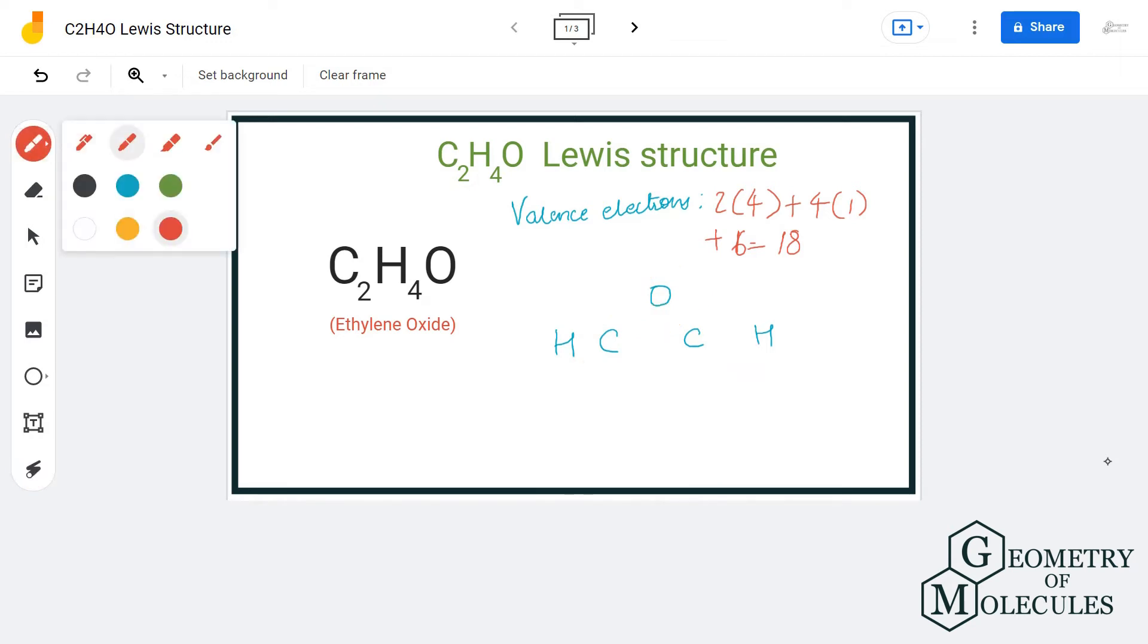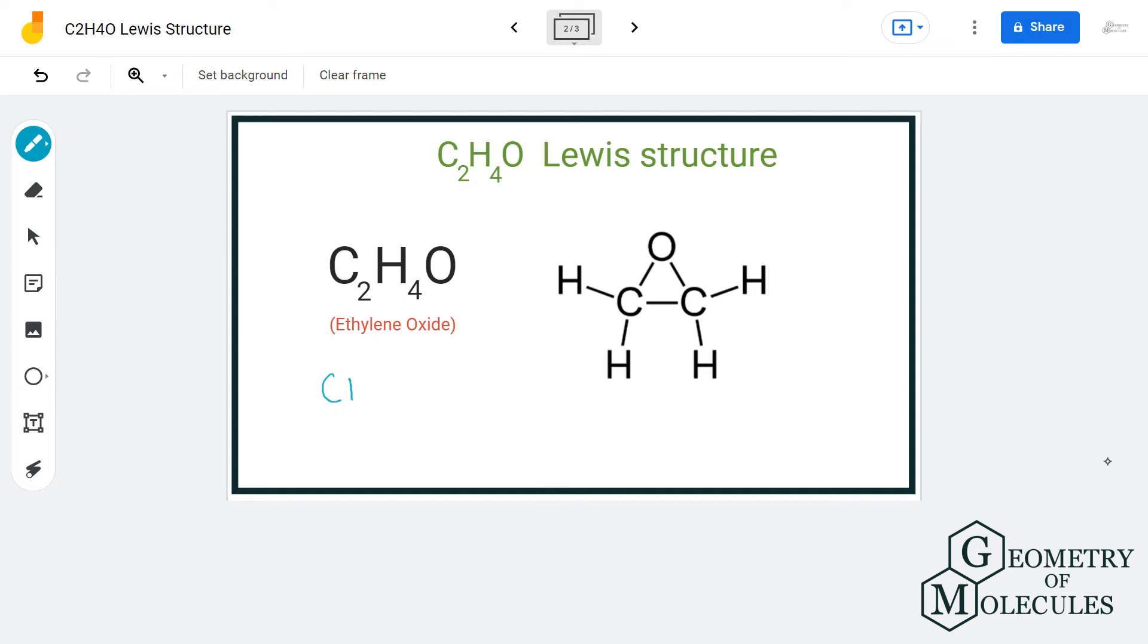So basically it is like two CH2 groups forming a bond with this oxygen atom. You can have a look at this structure over here. So it is written as CH2OCH2. It is also one way that you can remember how to draw this structure.